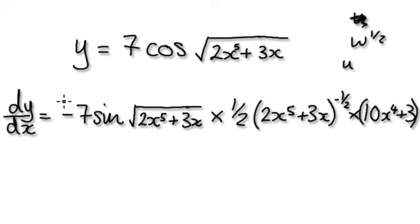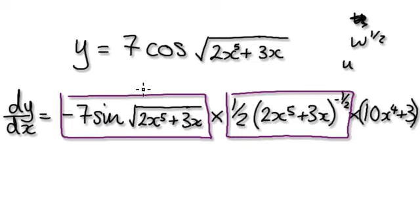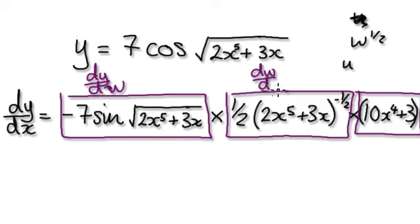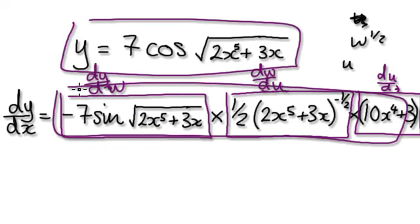So there, dy by dx is: dy by dw was that first part — minus 7 sine — and then dw by du was the one half times the bracket to the minus one half, and du by dx was 10x to the power of 4 plus 3. So when you differentiate this here, it would give you all of that.